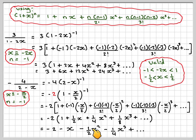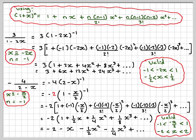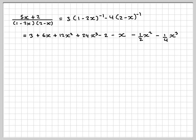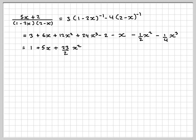Now combining both expansions. The first expansion gives 3 + 6x + 12x² + 24x³ and the second gives -2 - x - x²/2 - x³/4. Adding these: (3 - 2) + (6 - 1)x + (12 - 1/2)x² + (24 - 1/4)x³ = 1 + 5x + 23/2 · x² + 95/4 · x³. The second expansion is valid for |x/2| < 1, meaning -2 < x < 2.